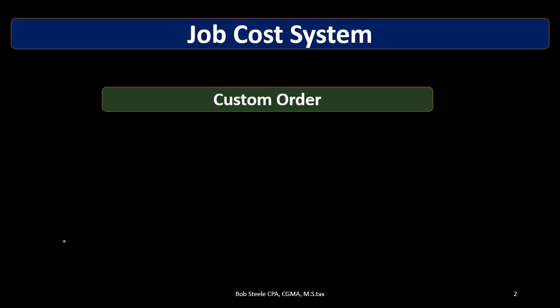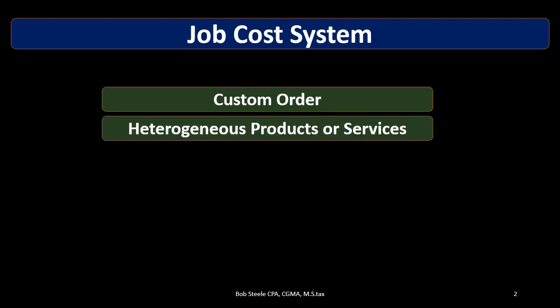Construction is another example — construction jobs are typically different in nature, so we use a job cost system. That's the first characteristic: if it's a custom order, we're typically going to use a job cost system. If we do any kind of manufacturing that's custom in some way, then the other characteristics follow from that.